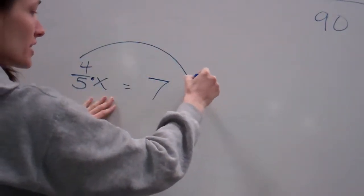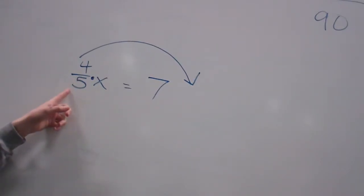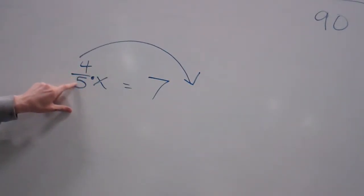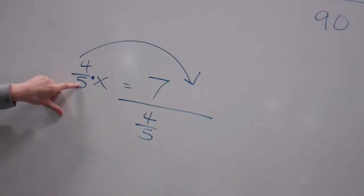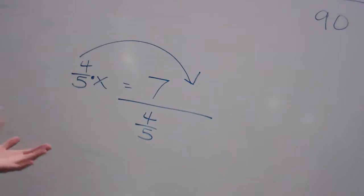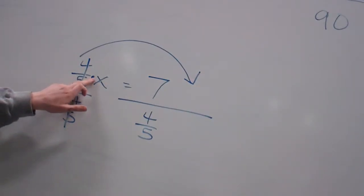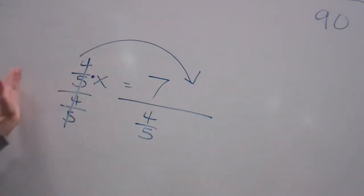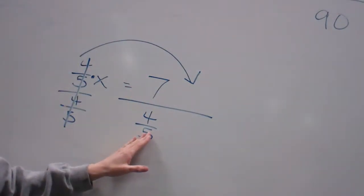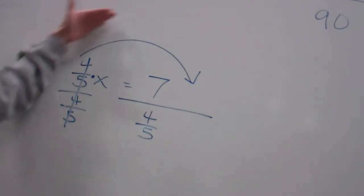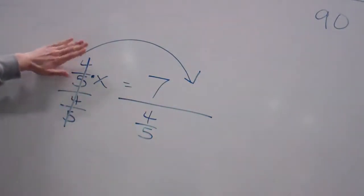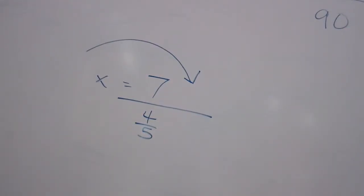When I move it across the equal sign, times 4 fifths would become the opposite. What is the opposite of multiplying something? Dividing something. So instead of it being times 4 fifths, I'm going to divide by 4 fifths. It's called the inverse operation. If you're multiplying, you're going to divide. If you're adding, you're going to subtract. When you take it across the equal sign, you have to do the opposite. So now we've got x equals 7 divided by 4 fifths.